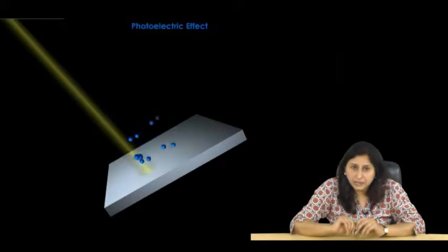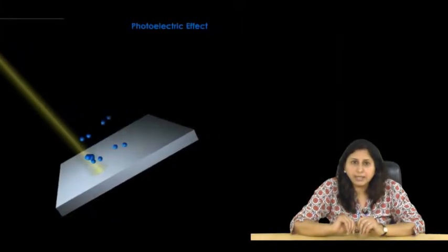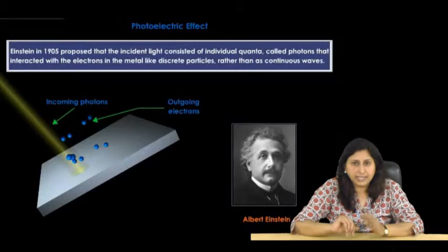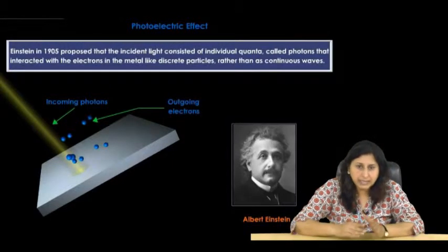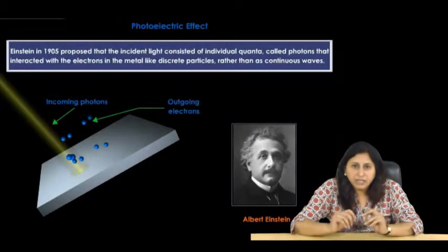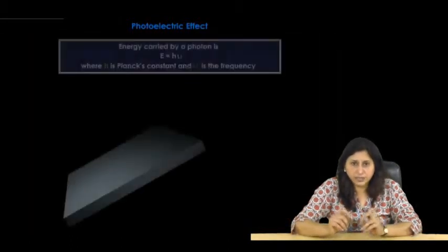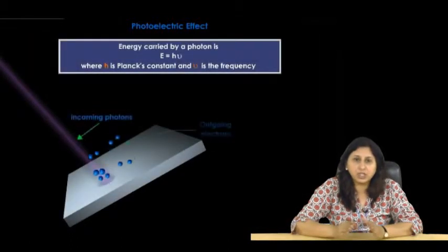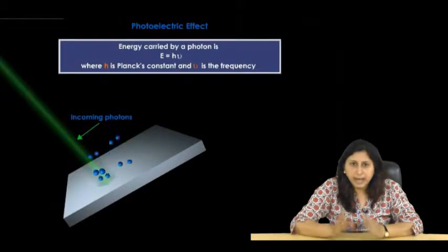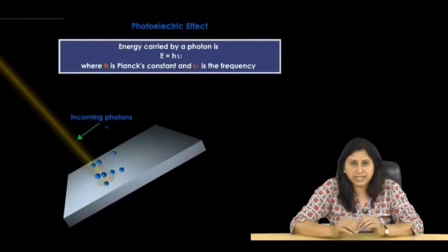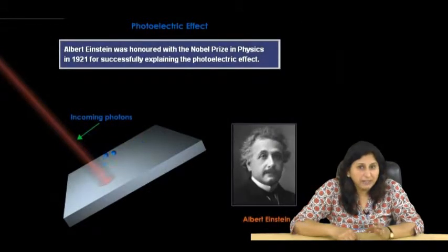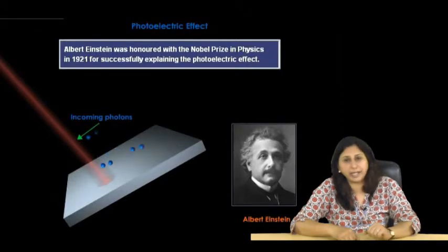In 1905, Einstein proposed that the incident light consisted of individual quanta called photons that interacted with the electrons in the metal like discrete particles rather than as continuous waves. For a given frequency or color of the incident radiation, each photon carried the energy E equal to H nu, where H is Planck's constant and nu is the frequency. Albert Einstein was honored with the Nobel Prize in Physics in 1921 for successfully explaining the photoelectric effect.